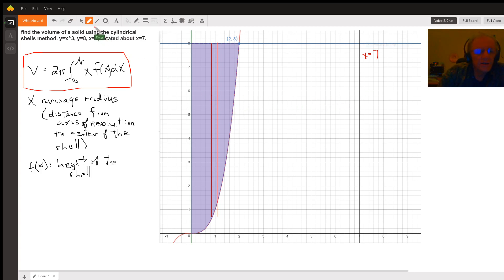What we're going to see is that, in this formula, X represents the distance or the average radius of that shell, and that's the distance from the axis of revolution to the center of your shell. And that distance is represented by 7 minus X. For any X value along the X axis, 7 minus X will be that distance.